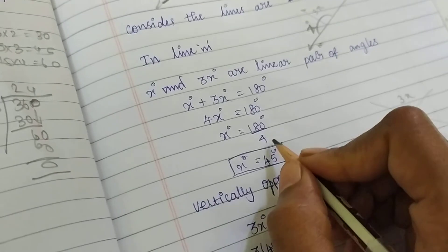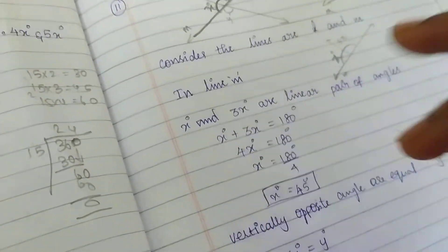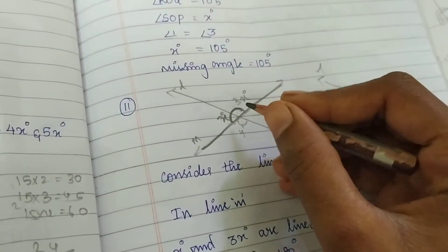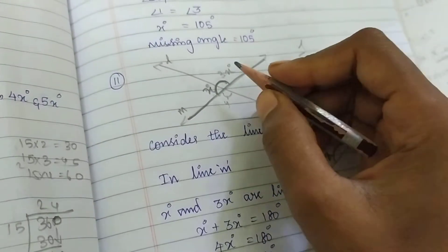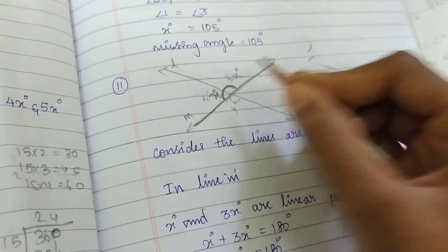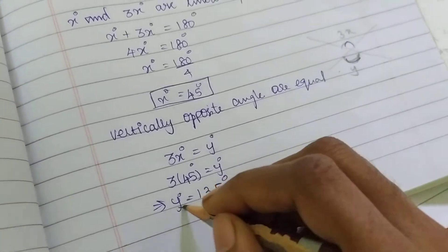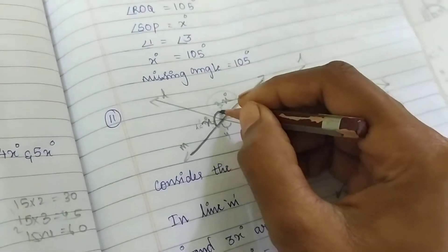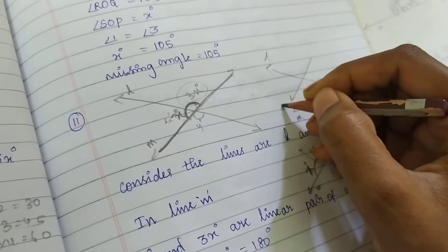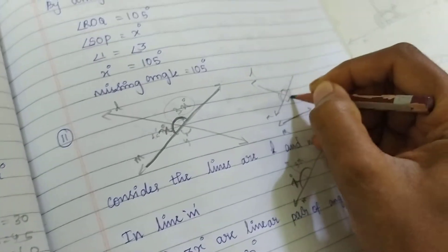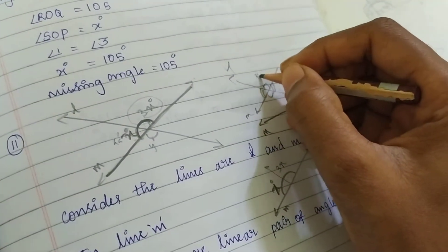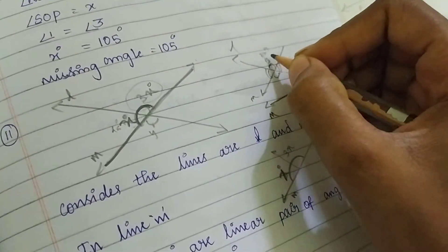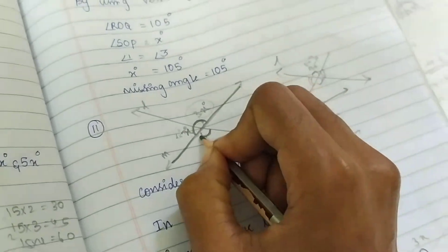That's why x degree plus 3x degree equals 180 degree. So I am adding this — what is my x value? 45 degree. They are asking to find x and y. I know my x degree value. I can find out — this is my 45 degree, 3 into 45 is 135 degree. We already know vertically opposite angles are equal, so 3x degree is equal to y degree. Substituting, y degree equals 135 degree.